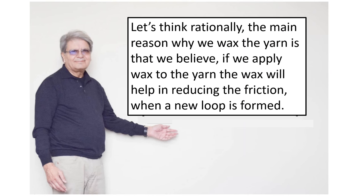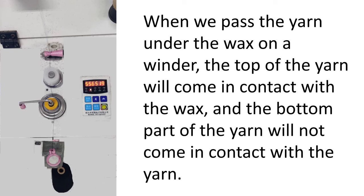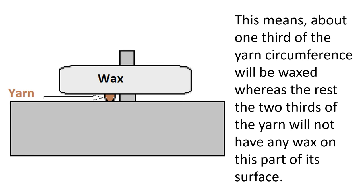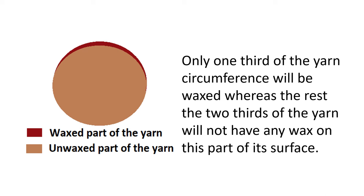Let's think rationally. The main reason why we wax the yarn is that we believe if we apply wax to the yarn, the wax will help in reducing the friction between yarns when a new loop is formed. When we pass the yarn under the wax on a winder, the top of the yarn will come in contact with the wax and the bottom part of the yarn will not come in contact with the wax. This means about one third of the yarn circumference will be waxed whereas the rest two-thirds of the yarn will not have any wax on this part of its surface.